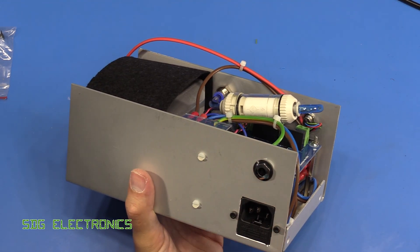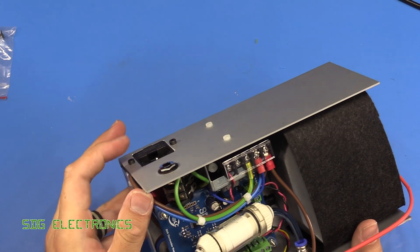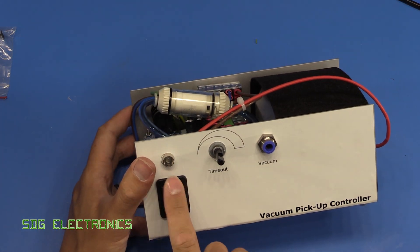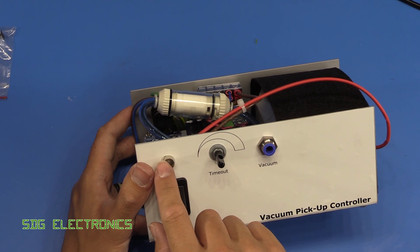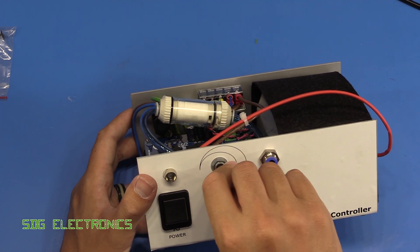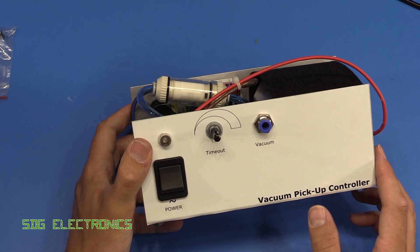But we've got the foot pedal connection at the back, the mains input, the power switch at the front, an LED which is slightly off from the label, so another annoyance there. The knob for the potentiometer hasn't turned up yet, so that's just going to be a stick sticking out and then we've got our connection to our vacuum tool.